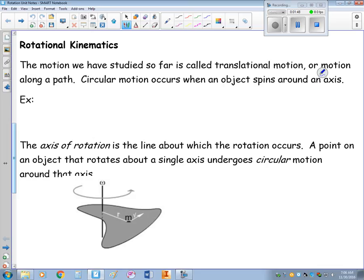So far what we've talked about is translational motion. Translational motion means in a line, or along a path. Circular motion is going to happen when an object spins around some sort of axis.